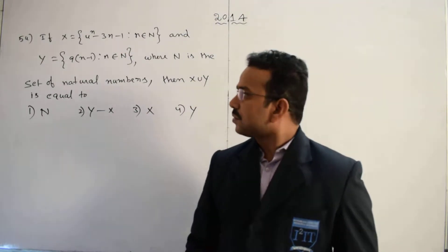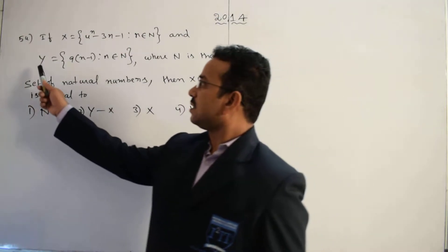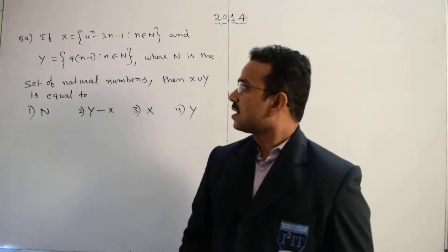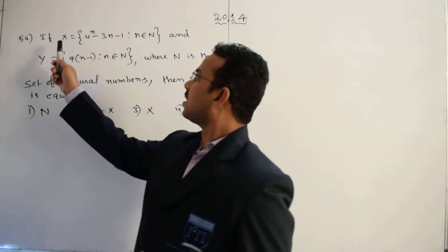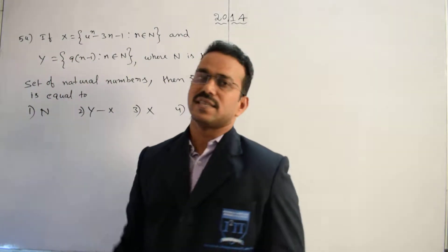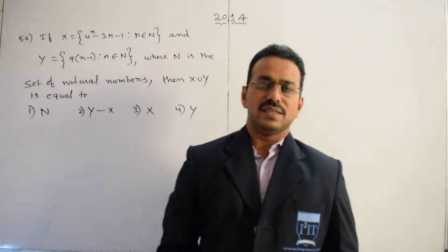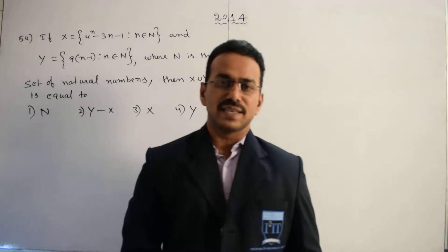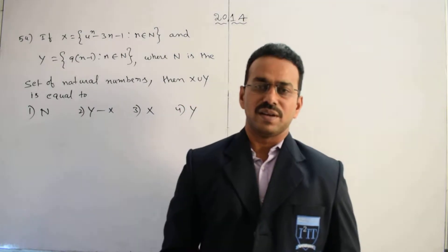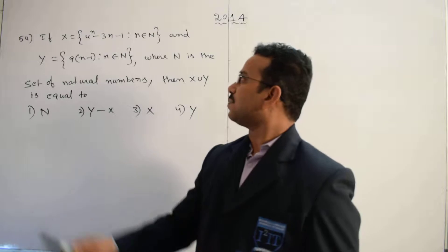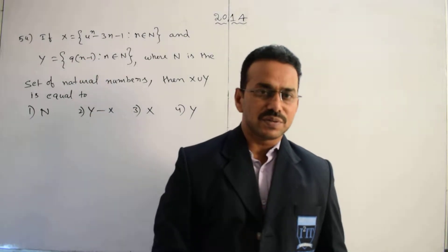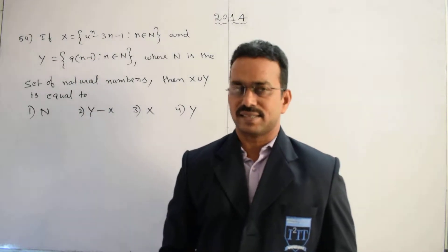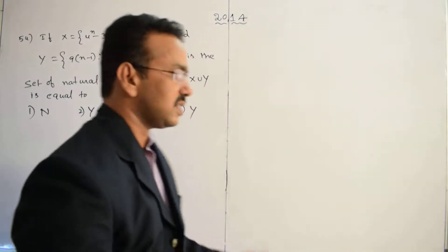In the given question, clearly the set Y equals multiples of 9, whereas for the set X we can't decide immediately. They have given an expression 4^n minus 3n minus 1. Let's simplify this expression and then decide the nature of the set X.